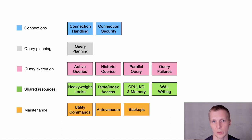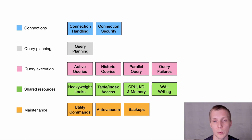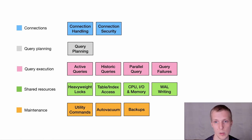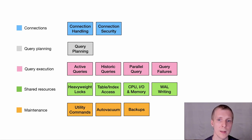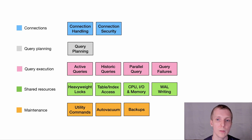There are five main categories I'd like to talk about today. First, connections — connection handling and connection security. Second, query planning, with some good improvements in Postgres 13. Third, query execution — active queries, historic queries, how parallel query gets surfaced in monitoring data, and how failures get handled. Fourth, shared resources — locks, table and index access, and overall system metrics like CPU, IO, and memory, including WAL activity and new functionality in Postgres 13. Fifth, maintenance — utility commands, autovacuum, and backups, highlighting new features in Postgres 13.